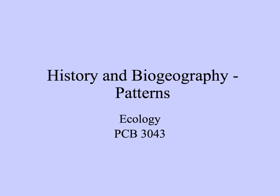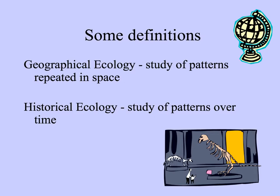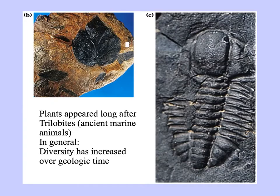Historical biogeography is the area of ecology that examines patterns of diversity across the surface of the globe. It's a combination of geographical ecology, the study of patterns in space, and historical ecology, the study of patterns over time. We know that plants appeared long after trilobites existed. In general, we can say that diversity has increased over geologic time.